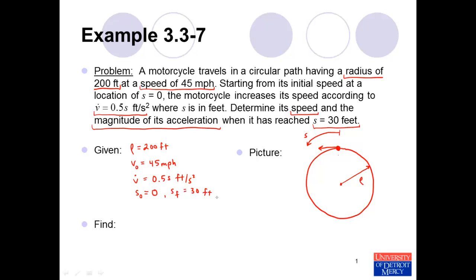So that's our final position, and we want to find the velocity — or more specifically, the speed — and we want to find the magnitude of the acceleration. The acceleration is a vector, but we just want its magnitude, which we will denote with two vertical bars.